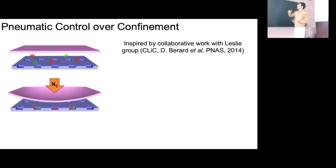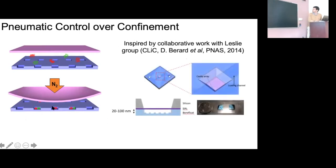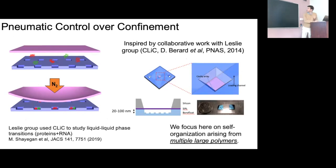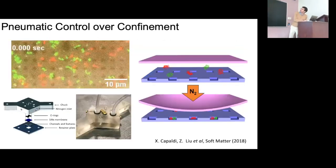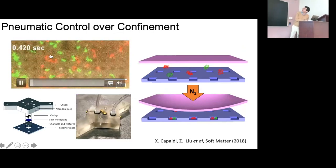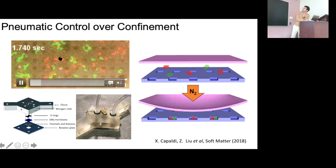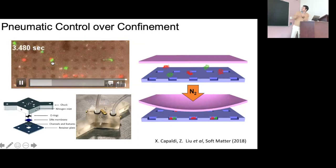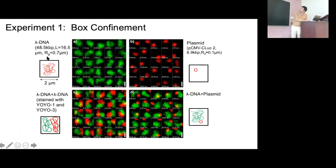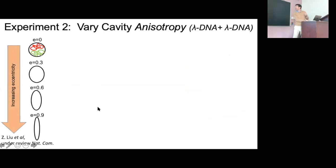We study this using a device inspired by Liz Strychalski's work. We apply pressure to squeeze molecules from cavities — a thin flap, applying high pressure to push down. This is distinct from pioneering work studying liquid-liquid phase separation because we're focusing on big multiple molecules. In fluorescence movies with lambda DNA labeled differentially — red and green fluorophores — we see two molecules interacting in a cavity. They actually segregate, with a kind of Brownian rotation. Other cases are single molecules just diffusing.